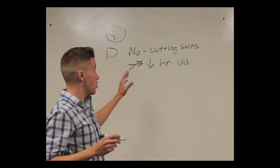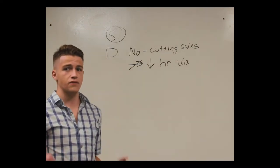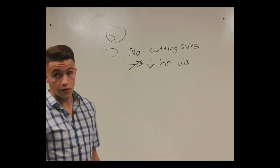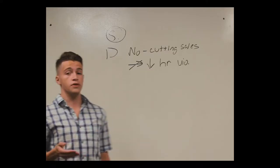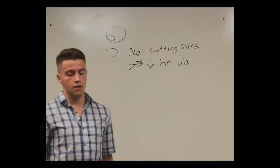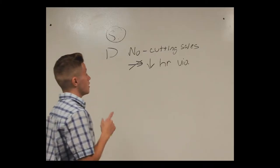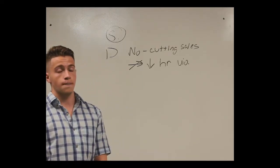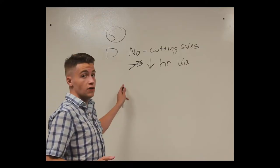So our assertion is that no, cutting sales does not decrease human rights violations. What's the reason to back that up? One thing you can say is that these countries already have weapons, so cutting arm sales won't reduce human rights violations because countries already have what they need to abuse human rights. Another way to use the deny is to say that non-highest-risk clients will still be able to abuse human rights, so there's no net reduction in human rights violations. Both of those are reasoning-based strategies you can use to answer the solvency part of the affirmative.